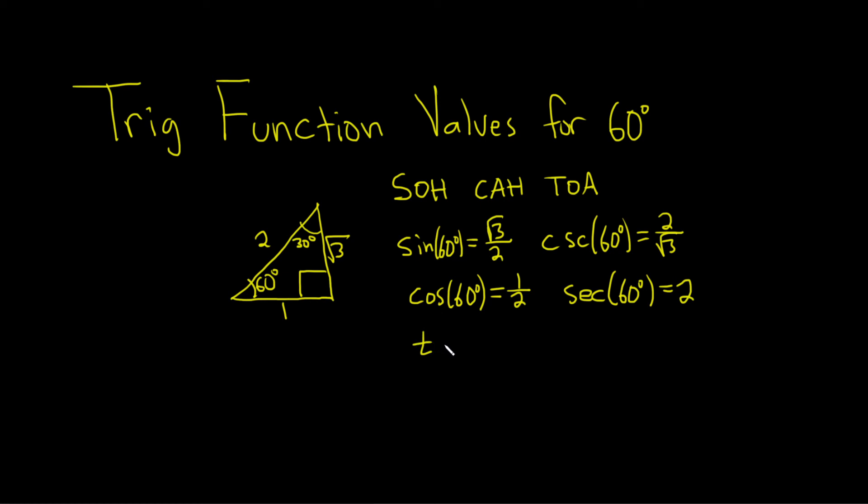Then we have the tangent of 60 degrees. This is SOH CAH TOA. So it's opposite over adjacent. So opposite here you see is the square root of 3. And adjacent is 1. So you just get the square root of 3, right? Opposite over adjacent.